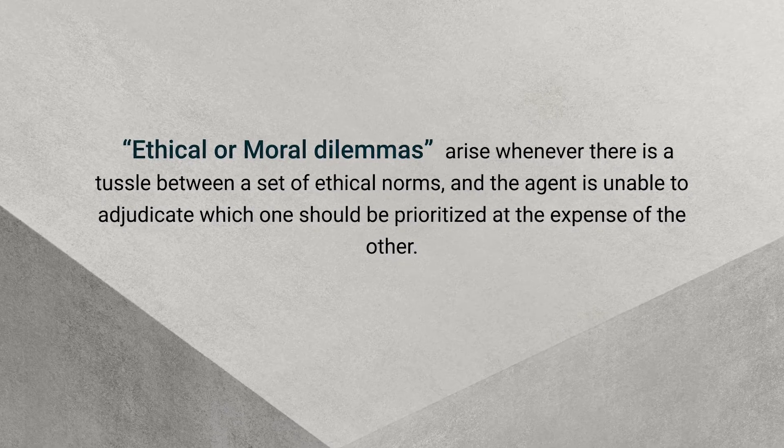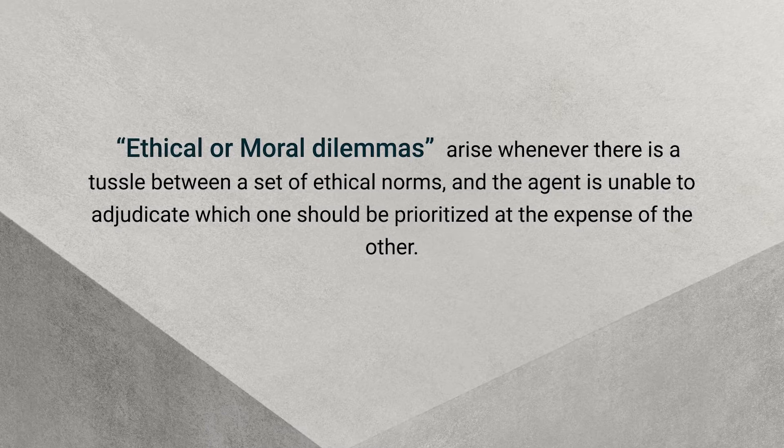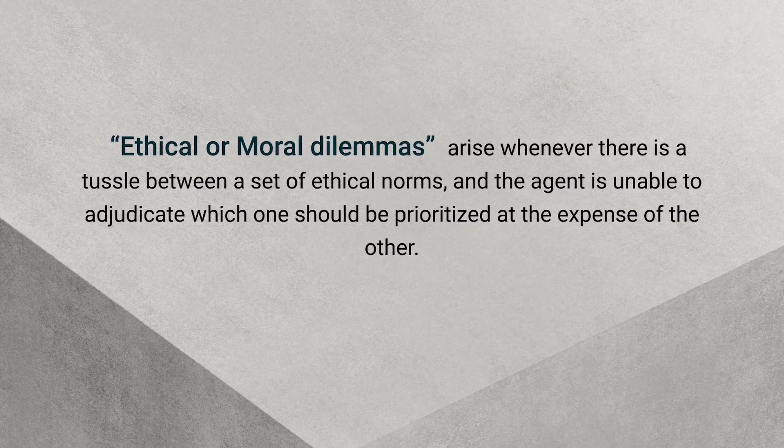Ethical or moral dilemmas arise whenever there is a tussle between a set of ethical norms and the agent is unable to adjudicate which one should be prioritized at the expense of the other. For example, what does one do if we find ourselves in a situation where we are required to choose between giving a bribe and saving the life of a loved one? Allowing an unlawful transaction of money would save a loved one's life, while refusing it would mean knowingly allowing the person to die. But in giving a bribe, we would be violating a given social norm and also setting a wrong example for others.